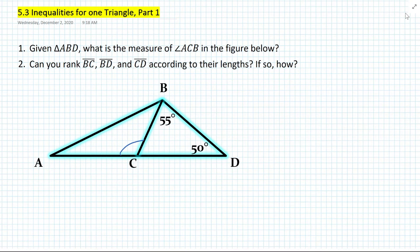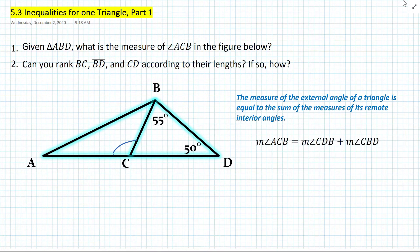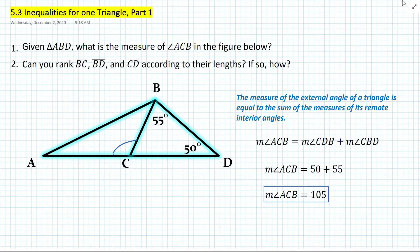Let's solve number 1. We want to find the measure of angle ACB as shown in the figure. We know the following theorem: the measure of the external angle of a triangle is equal to the sum of the measures of its remote interior angles. Therefore, the measure of angle ACB equals the measure of angle CDB plus the measure of angle CBD, which gives us 50 plus 55, so the measure of angle ACB equals 105.